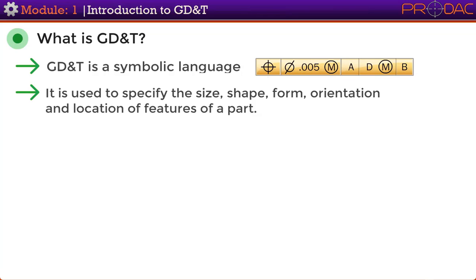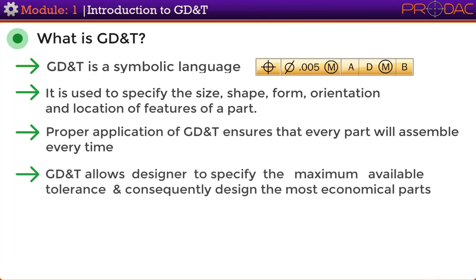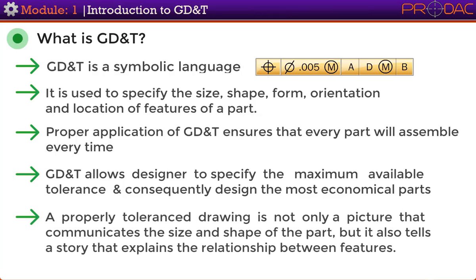Proper application of GD&T ensures that every part will assemble every time. GD&T allows the designer to specify the maximum available tolerance and consequently design the most economical parts. A properly toleranced drawing is not only a picture that communicates the size and shape of the part, but it also tells a story that explains the relationship between features.